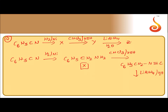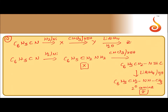Lithium aluminium hydride is a reducing agent. This isocyanide on reduction will give a secondary amine. So Z is C6H5CH2NHCH3 — a secondary amine.